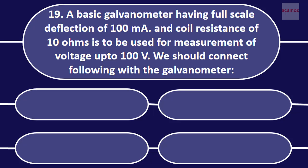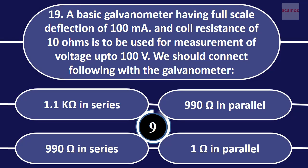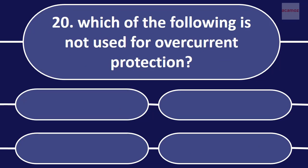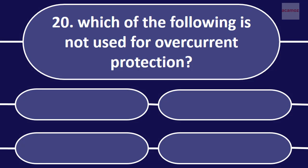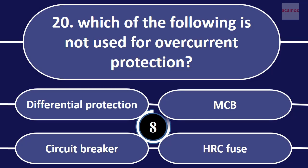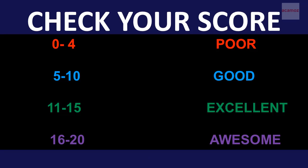Which of the following is not used for overcurrent protection? Differential protection, MCB, circuit breaker, HRC fuse. Differential protection.